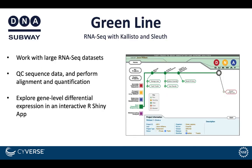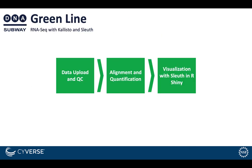Greenline is an RNA-seq workflow featuring Kallisto and Sleuth. You can work with large RNA-seq datasets and explore gene-level differential expression. Once you upload and QC your data, you can align and quantify those data, and visualize the results across all the genes in your transcriptome using Sleuth in an interactive rShiny app.